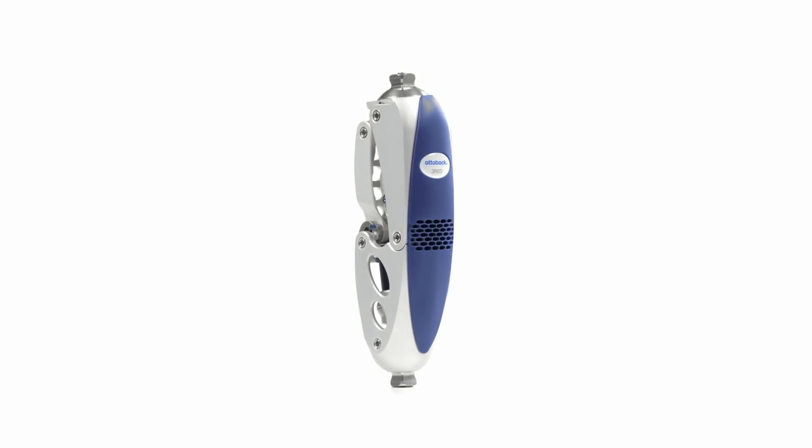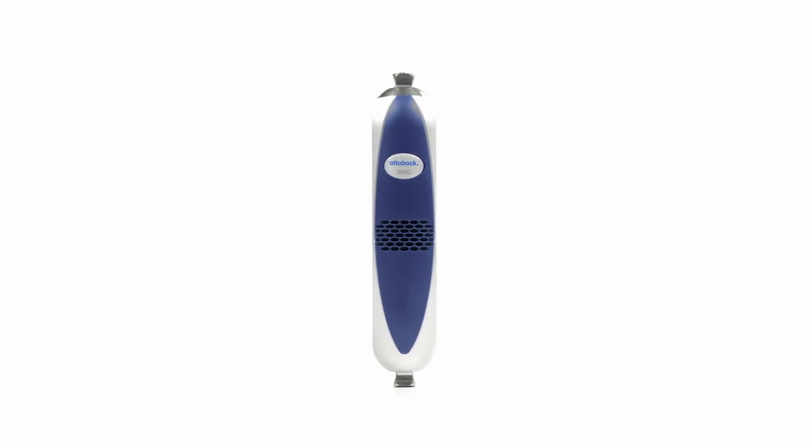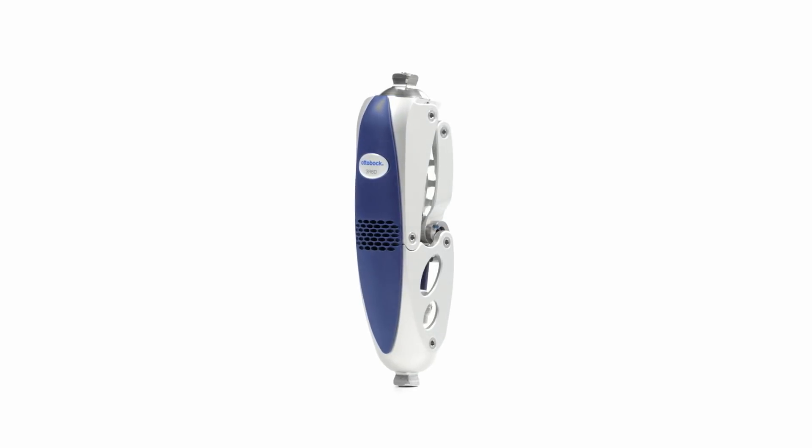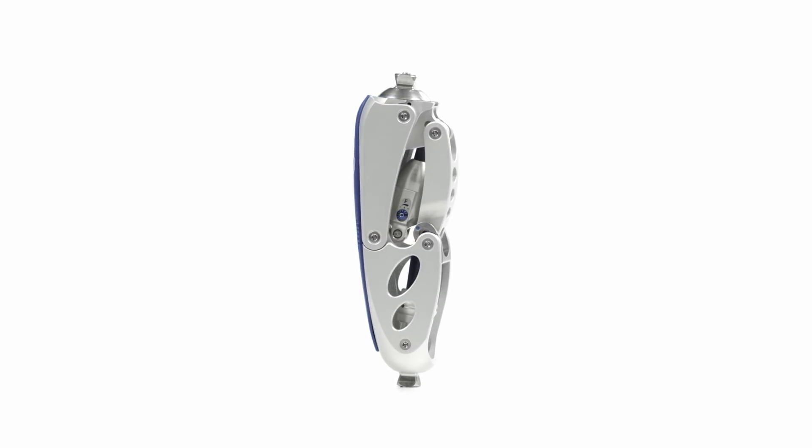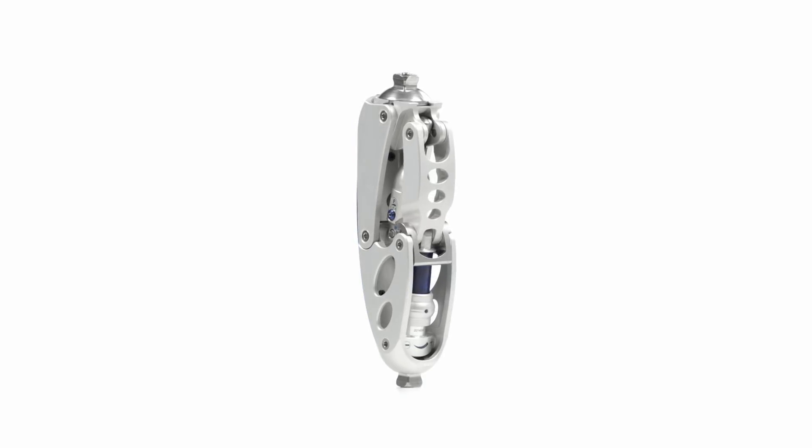The polycentric knee joint 3R60 with hydraulic swing phase control is recommended mainly for MOBIS III lower limb amputees with a body weight up to 125 kilograms.